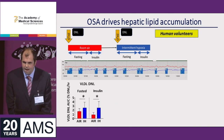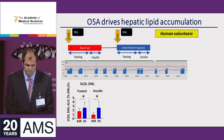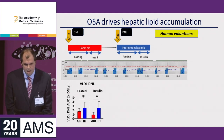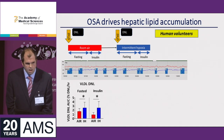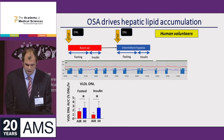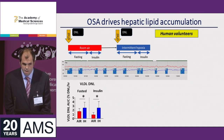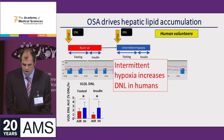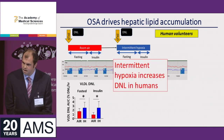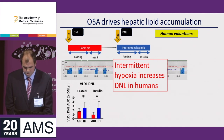As with our rodents, we saw consistent increases in de novo lipogenesis, here measured in the liver-specific VLDL lipid fraction, in both the fasted state after prolonged exposure to hypoxia and also in a hyperinsulinemic state. So our human data certainly marries up with the rodent data — intermittent hypoxia does indeed increase de novo lipogenesis, at least in my experimental models.